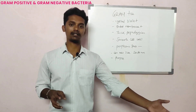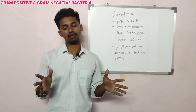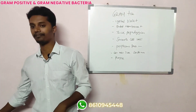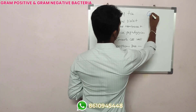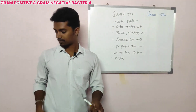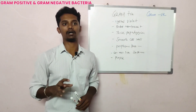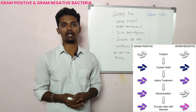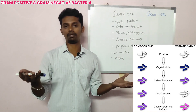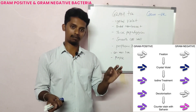What are the differences between gram positive and gram negative bacteria? The organism can be gram positive or gram negative. Let's begin the class. We will explain the gram staining procedure. Petri dish A is gram positive, petri dish B is gram negative.